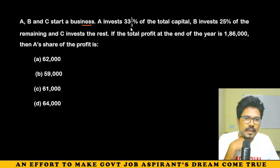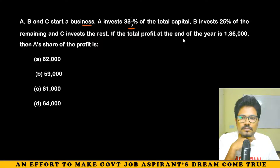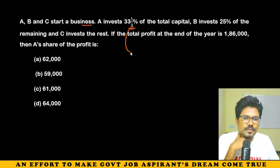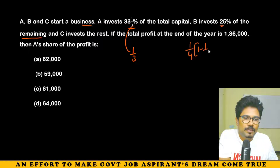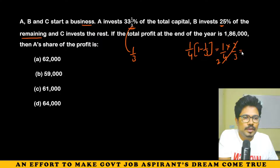Next question: A, B, C start a business together. A invests 33.33% of total capital, which is 1/3. B invests 25% of the remaining, which is 1/4 of the remaining 2/3, giving 1/4 × 2/3 = 1/6. So B's share is 1/6.